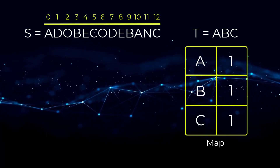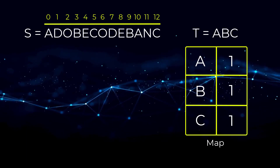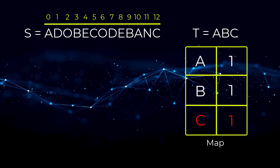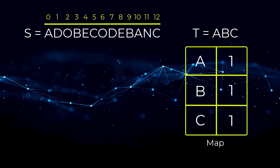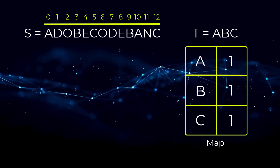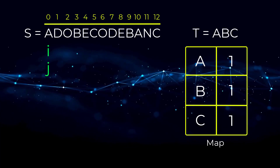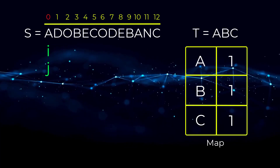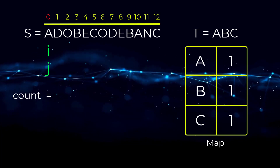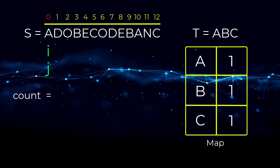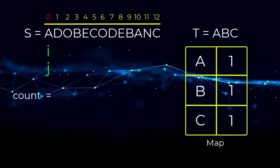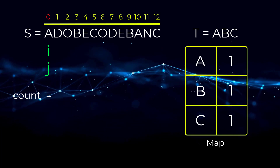The first thing we need to do is create a map to generate a count of all characters in string T. This is so that as we iterate through string S, we will know how many characters we have seen in T. So far, A has a count of one, B has a count of one, and C has a count of one.